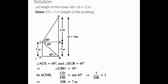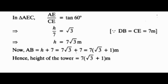Now let's consider triangle AEC. In triangle AEC, AE upon CE equals tan 60 degrees. Applying tan theta — opposite side by adjacent side — tan 60 degrees equals root 3, so AE upon CE equals tan 60 degrees. This implies h by 7 equals root 3. Cross-multiplying, h equals 7 root 3 meters. Therefore DB equals CE equals 7 meters. So AB equals h plus 7, giving us 7 root 3 plus 7 equals 7 into (root 3 plus 1) meters. Therefore the height of the tower is 7(root 3 + 1) meters.